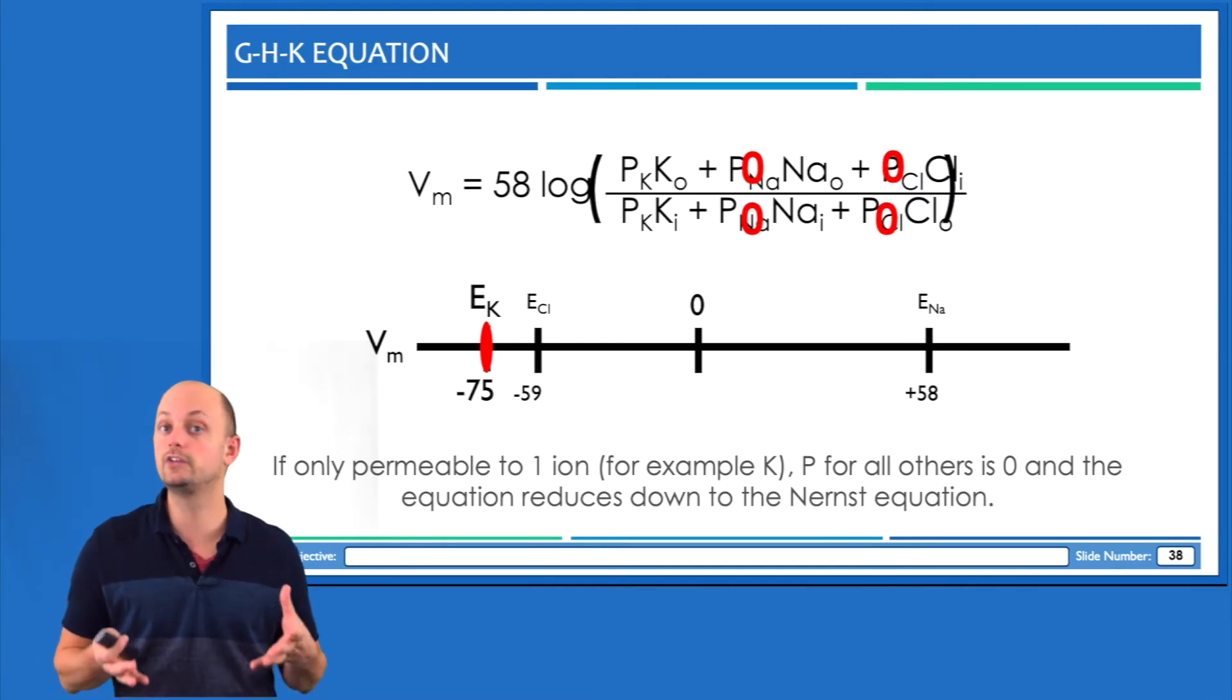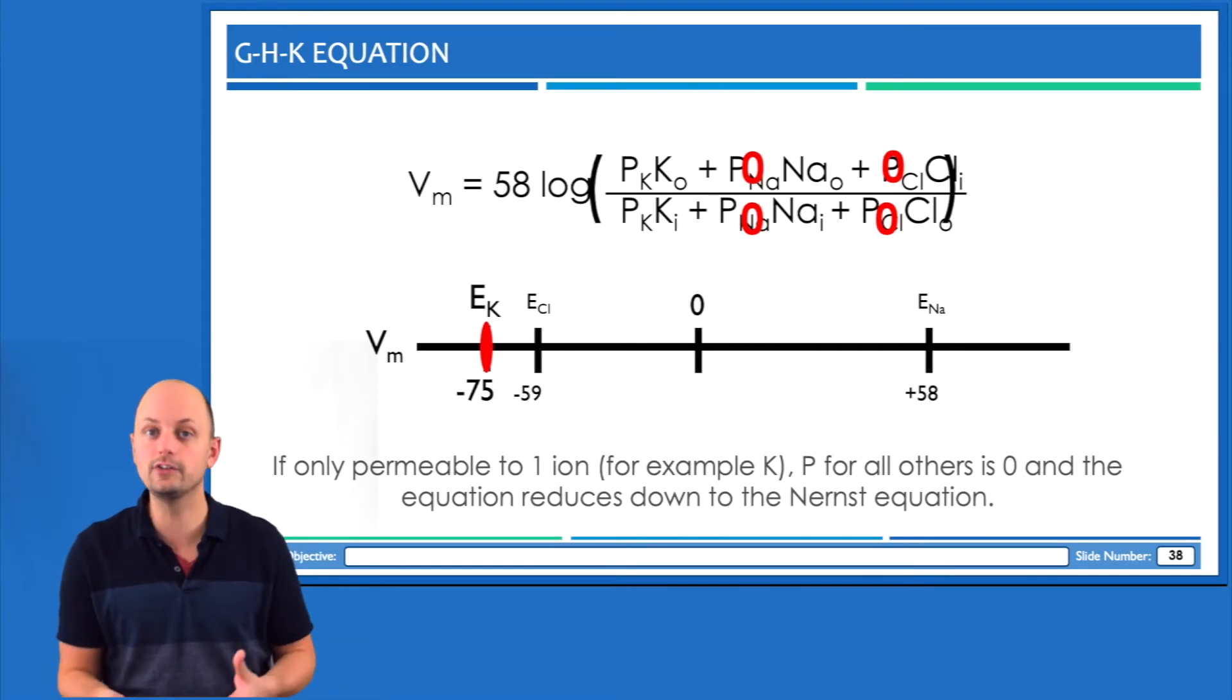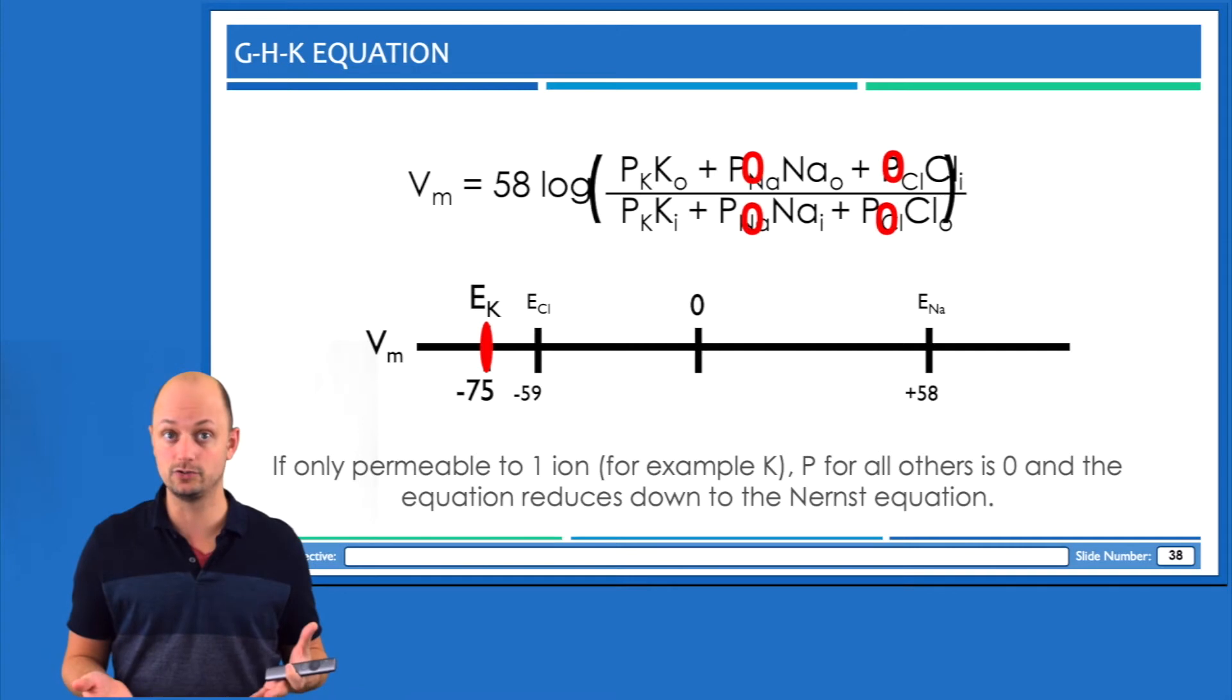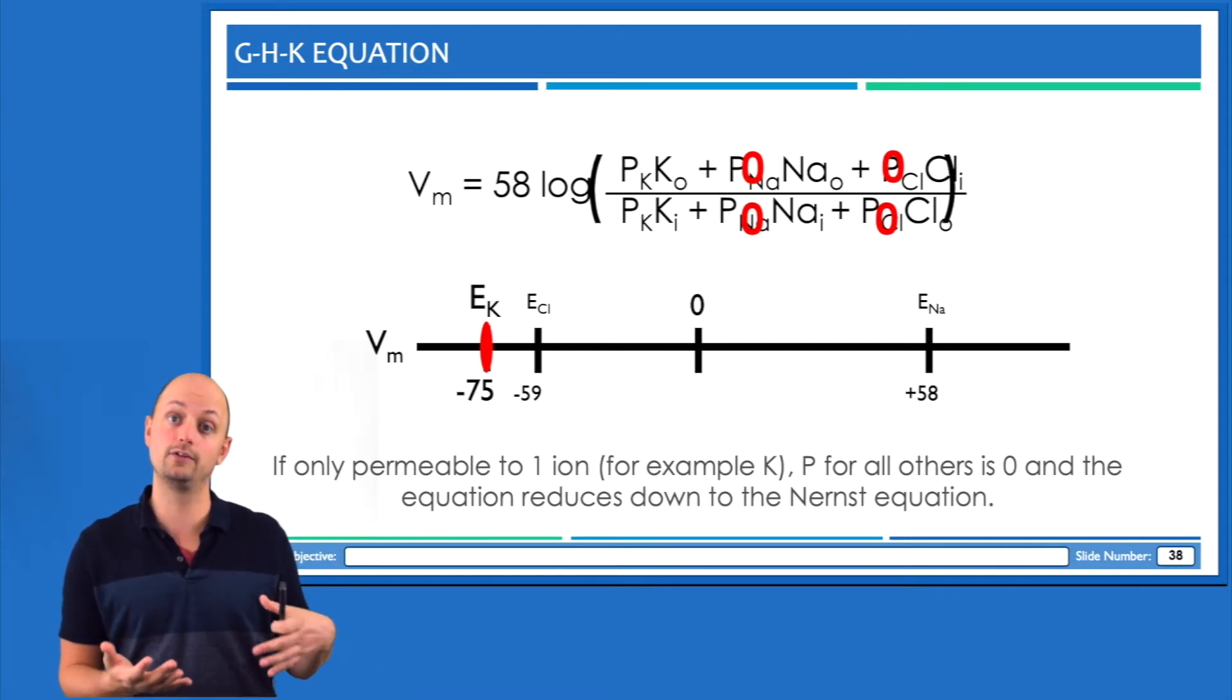That essentially reduces the GHK equation down into the Nernst equation, because now the only thing that would be setting membrane potential is the concentrations of the single ion that's still permeable.